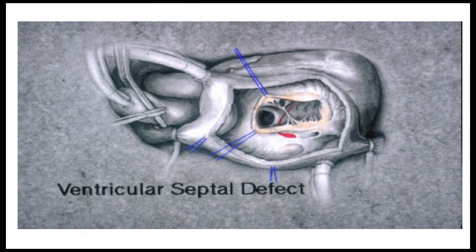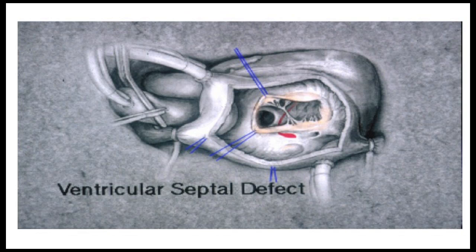Of course, there are other holes in the heart. Another location is in the pumping chambers of the heart, between the left and the right-sided pumping chambers. You can see here through the tricuspid valve, which is being retracted by those blue sutures, that there is a hole right behind the tricuspid valve, and that's called a ventricular septal defect. Many times these ventricular septal defects close by themselves — that is to say they close naturally. However, others do not and require surgical attention.